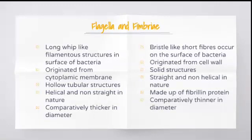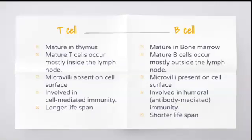The next question is: differentiate between T-cell and B-cell. T-cell is a T-lymphocyte and B-cell is a B-lymphocyte. T-cell matures in the thymus whereas B-cell gets matured in bone marrow. Mature T-cells occur mostly inside the lymph node whereas B-cells are always present outside the lymph node.